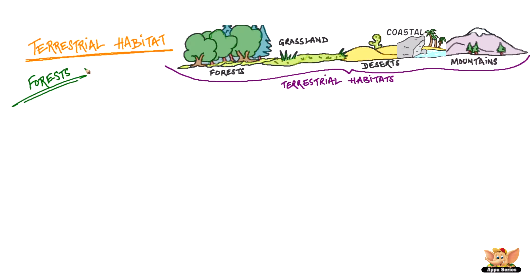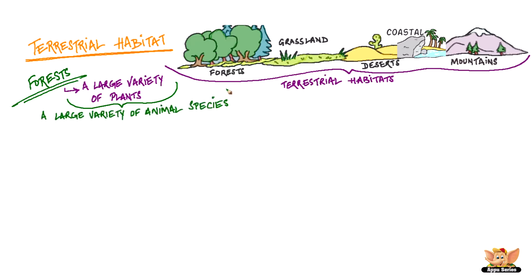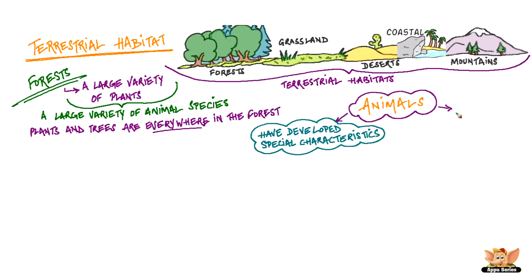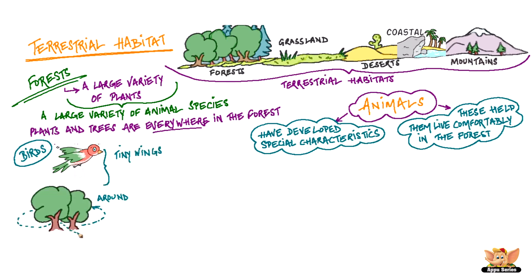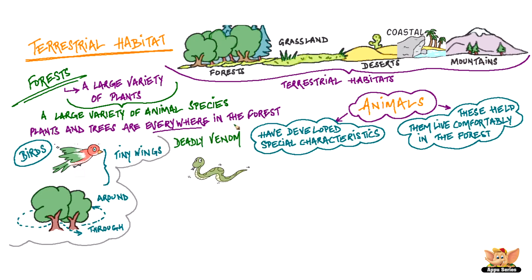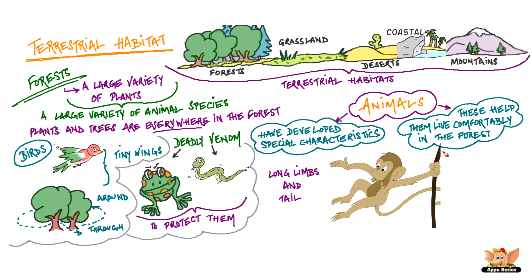Forests are the natural storehouses of a large variety of plants. This makes them the ideal home for a large variety of animal species. But since there are plants and trees everywhere, animals have developed special characteristics to help them live comfortably in the forest. Birds in the rainforests have tiny wings that help them fly around and through the trees easily. Some animals produce deadly venom to protect them, while others like monkeys have long limbs and tail to help them climb trees and get to their food.